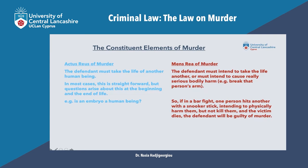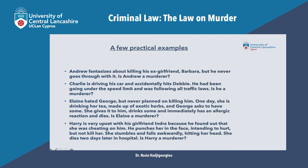So having clarified the actus reus and the mens rea of murder, let's look at a few practical examples. The first one: Andrew fantasizes about killing his ex-girlfriend Barbara, but he never goes through with it. Is Andrew a murderer? Well, the mens rea seems to be satisfied — he intends to kill his ex-girlfriend. However, the actus reus is not satisfied; she is still very much alive. Because you need both the actus reus and the mens rea in order to have murder, Andrew is not a murderer.